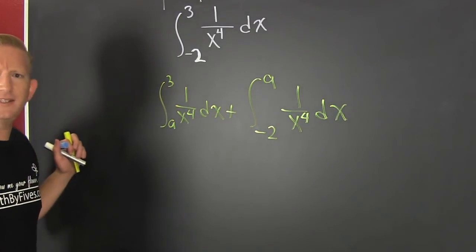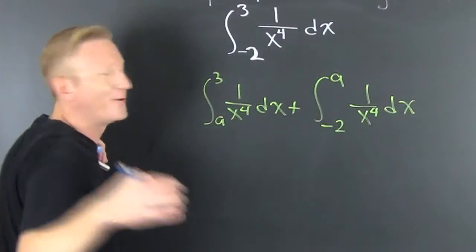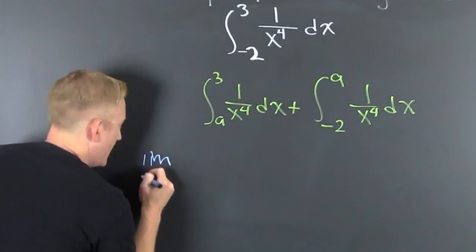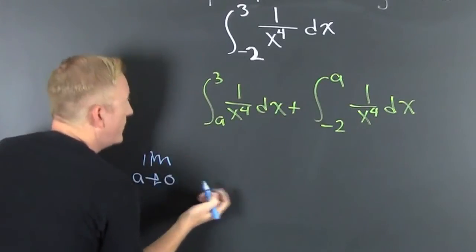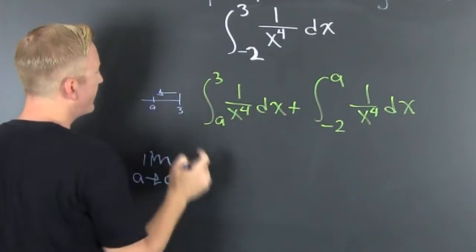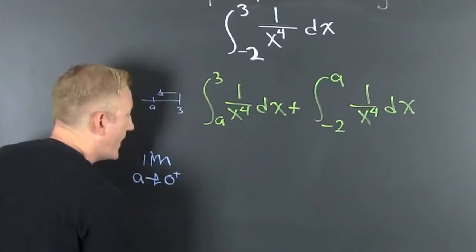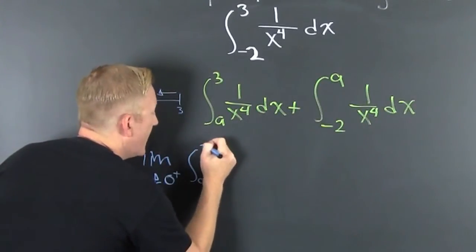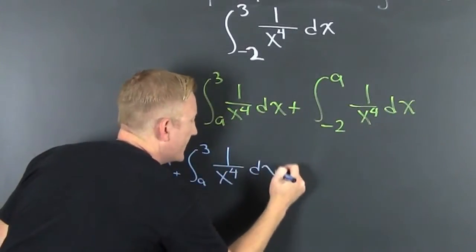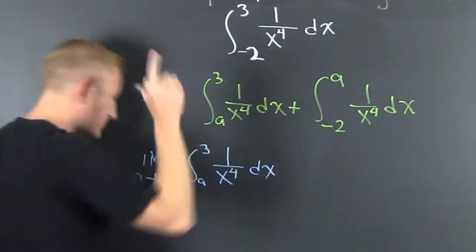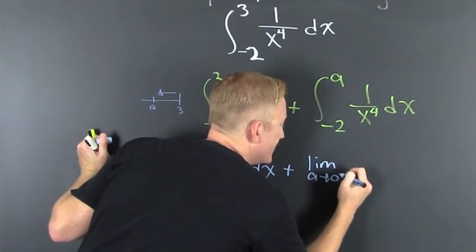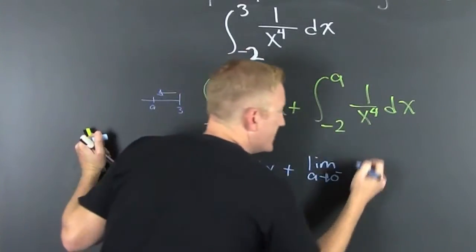So this is the limit as a approaches zero — from which direction? Here's three, here's a, it's approaching from the right, so I write a-plus. This is the integral from a to 3 of 1 over x to the 4 dx. This is due to the improperness.